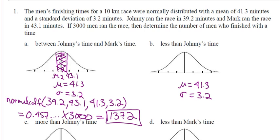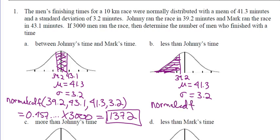Less than Johnny's time — Johnny is at 39.2. All I care is that 39.2 is to the left, lower. Less than Johnny's time means guys out here on the left, which in a race means they're actually better than Johnny if they have a lower time. You've just got to wrap your head around it.